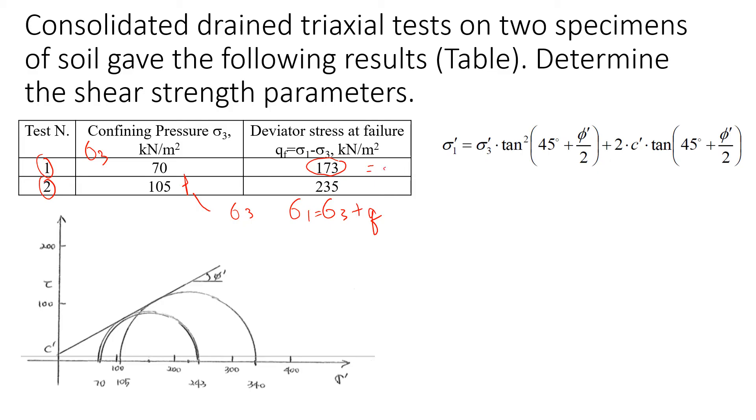For test number one, sigma 1 will be 70 plus 173, and that will give us 243 kilonewtons per square meter. For the second test, sigma 1 at failure will be 105 plus 235, which will be 340 kilonewtons per square meter.